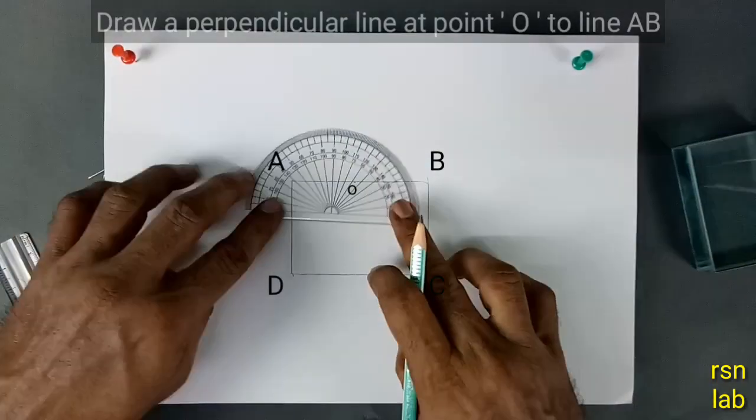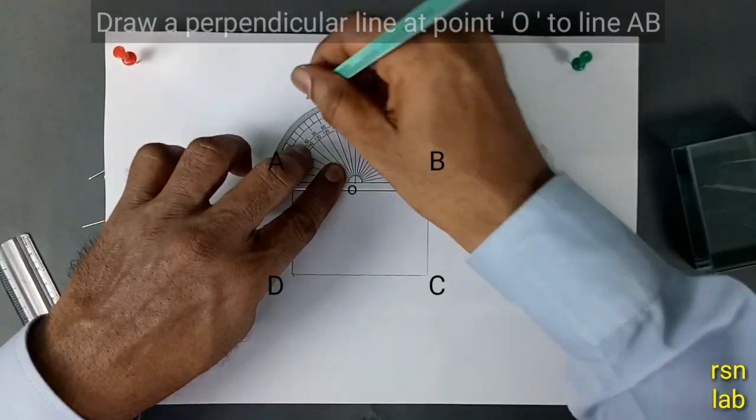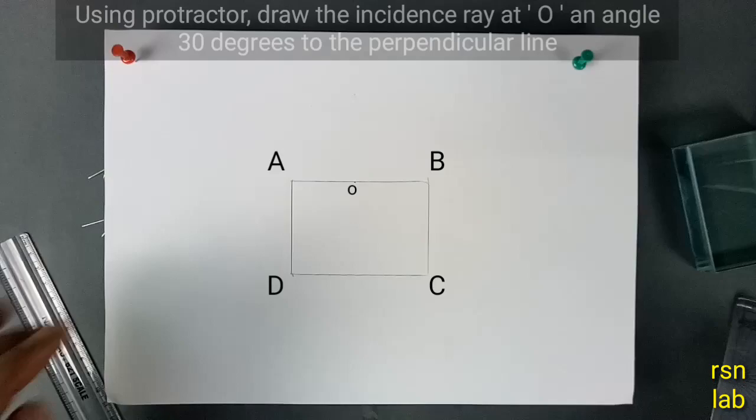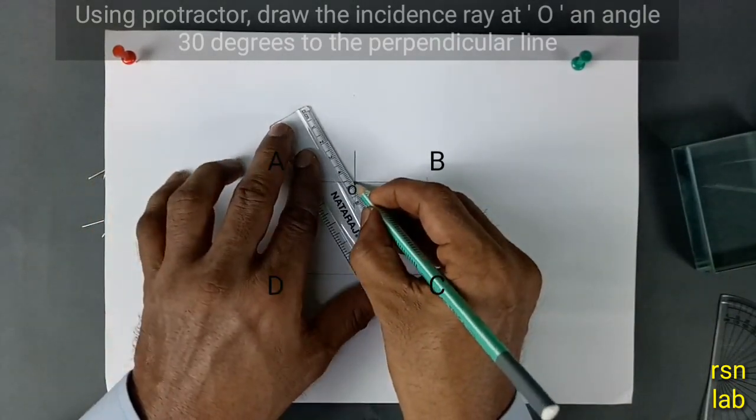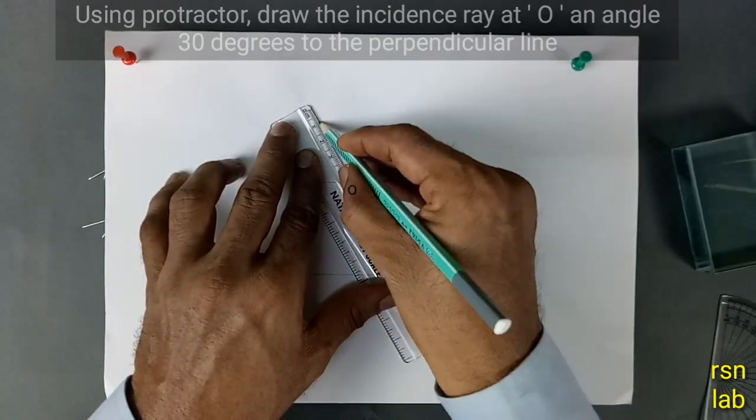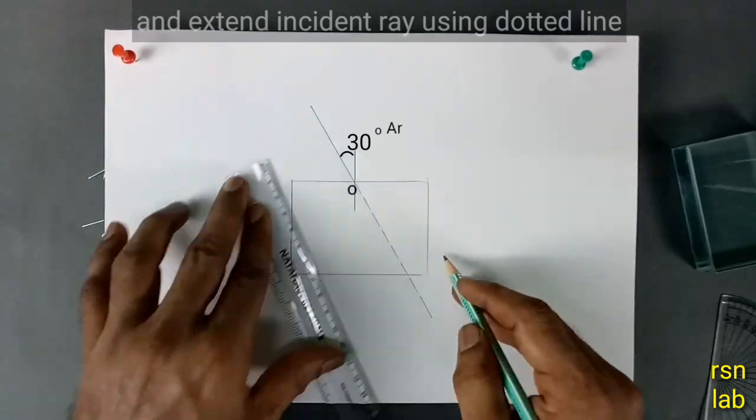Draw a perpendicular line at point O to line AB. Using protractor, draw the incident ray at O at angle 30 degrees to the perpendicular line, and extend the incident ray using dotted line.